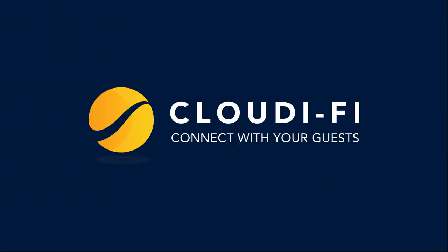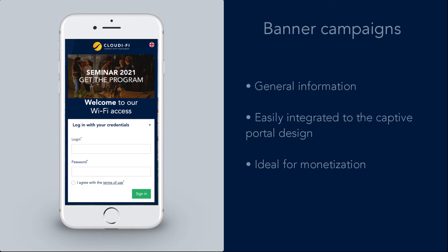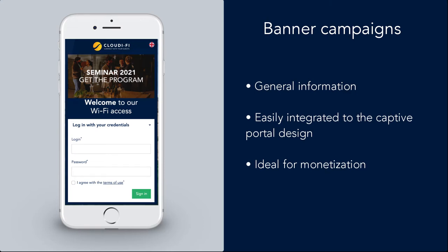There are three types of campaign: banner campaigns, background campaigns, and splash campaigns. Banner campaigns are very useful for businesses who want to communicate with their audience through their portal. For example, a company may need to inform its employees about an upcoming event, like a seminar.